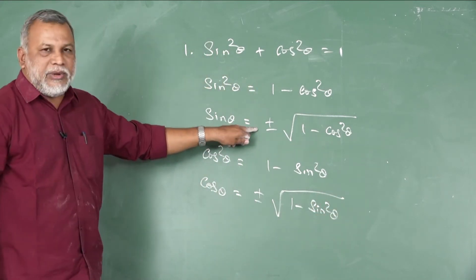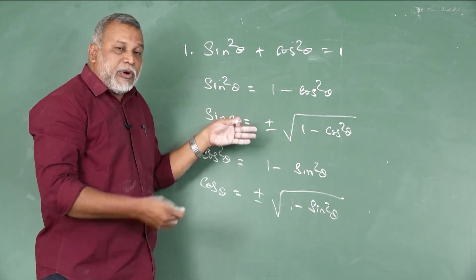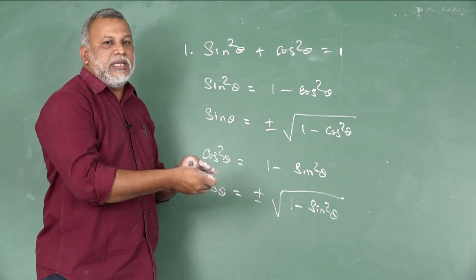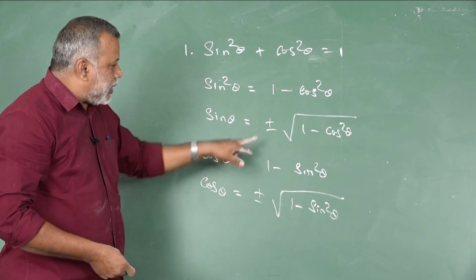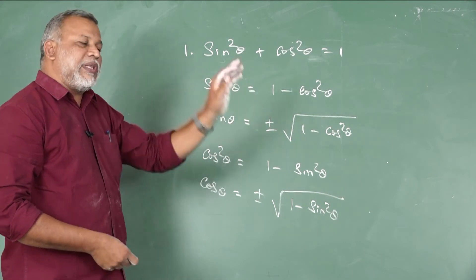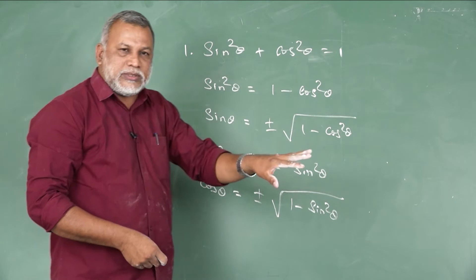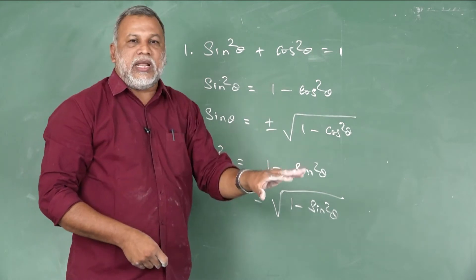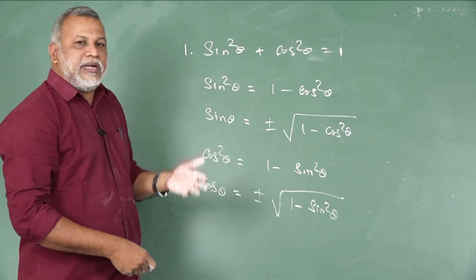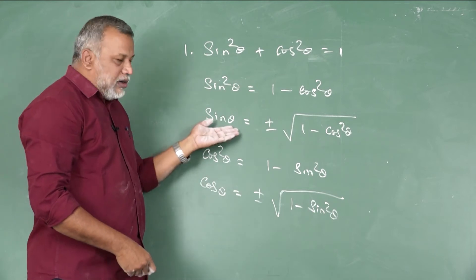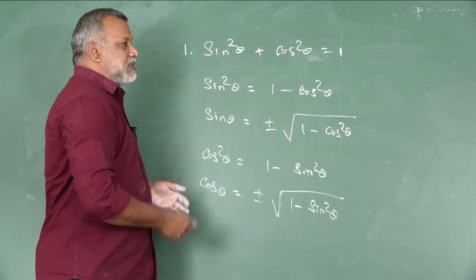Here I am using plus or minus. Why? It depends upon the quadrant — it may be positive or it may be negative. In your 10th standard syllabus you discuss only the first quadrant, where all values are positive. But here we are studying about all the quadrants, so we always use plus or minus for sin θ and cos θ.